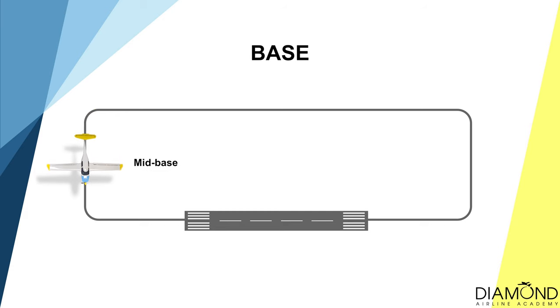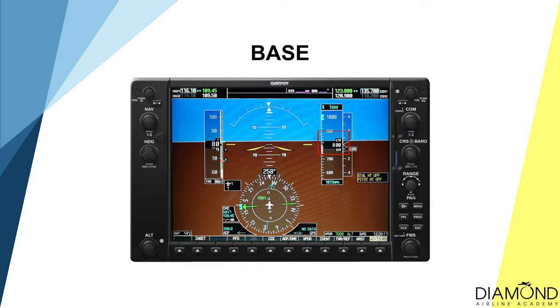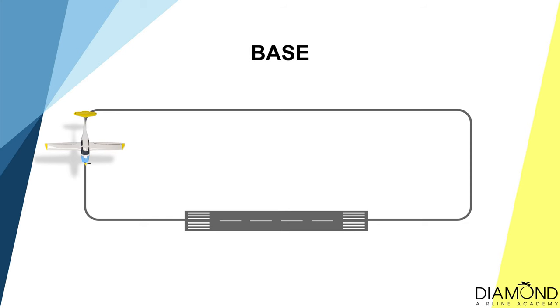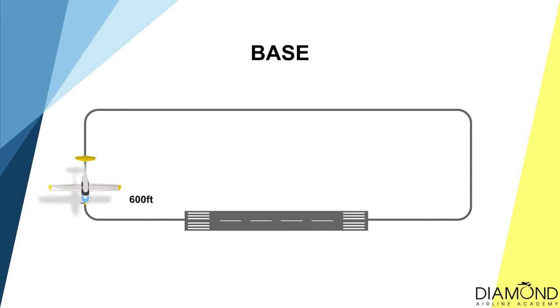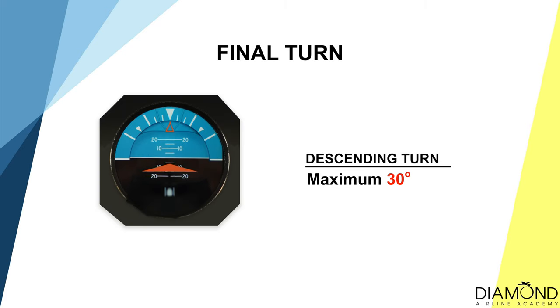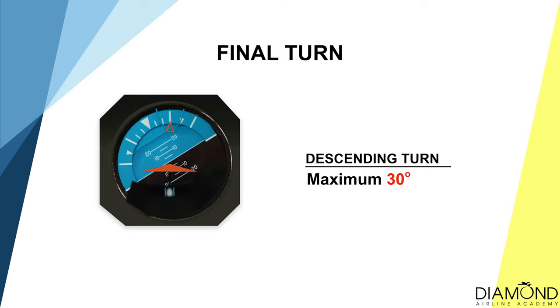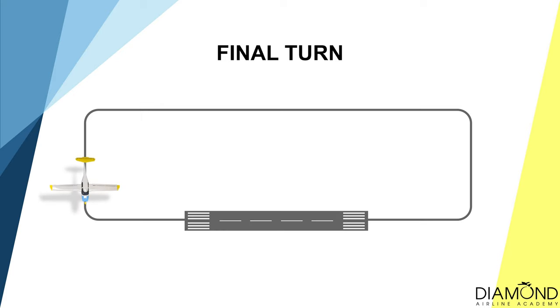When reaching the middle of the base leg — the mid-base assessment point — the aircraft should be roughly at 800 feet. If above 800 feet, reduce power and lower the nose. If below 800 feet, add power and raise the nose. If at about 800 feet, continue to descend normally until reaching 600 feet, then start the turn onto final. During the final turn, angle of bank cannot be more than 30 degrees. Ideally, the aircraft should line up with the runway accurately by the end of the base-to-final turn.